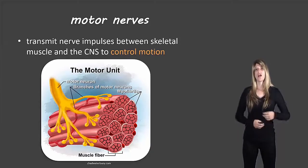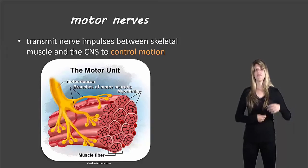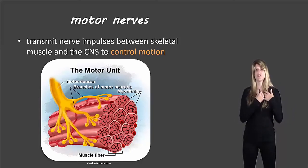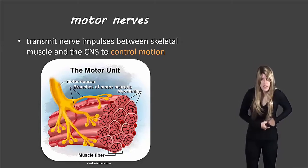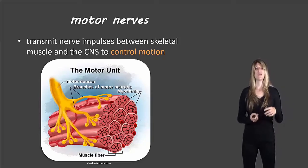So if you've got a pain in your gut and that information has been sent through your sensory nerves to your central nervous system, maybe your central nervous system decides that the best action is to bend over and clutch your stomach.